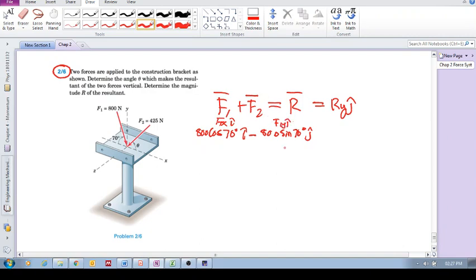And what about this guy? I'm just going to write it below here. So that's going to be minus 425 cos of theta in the I direction or the X direction, minus 425 sin theta, J. So we've just written these vectors out, is equal to then RY, J.